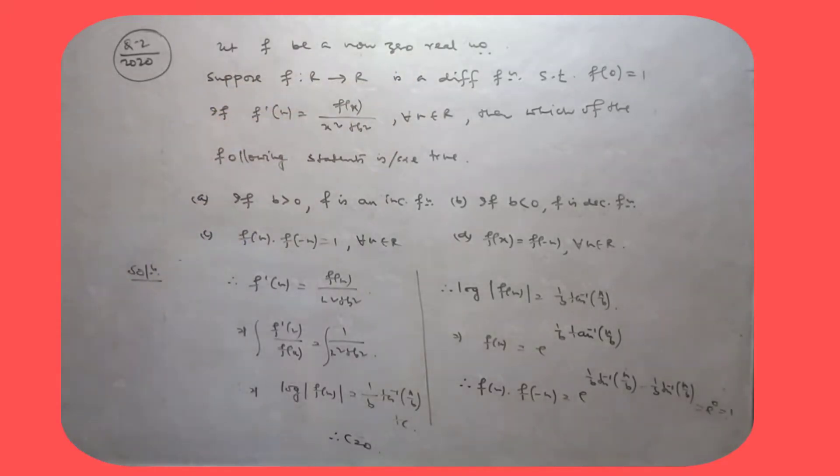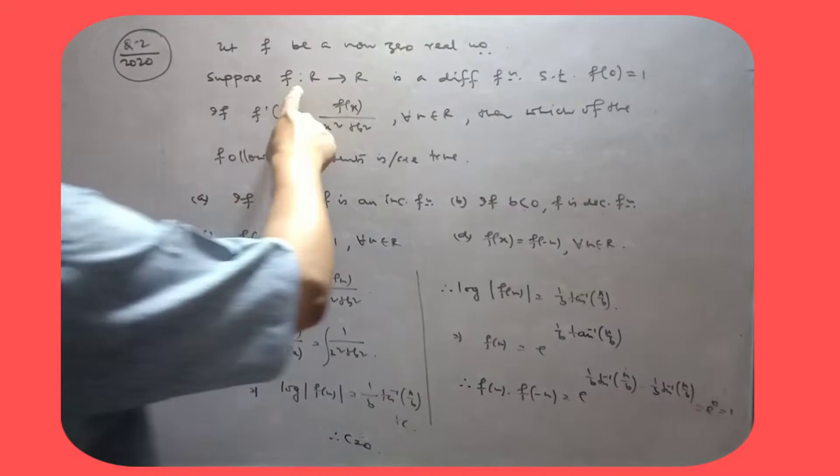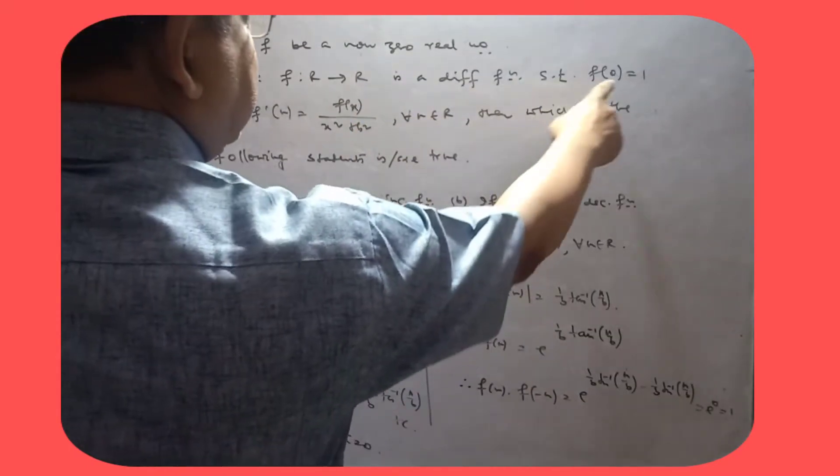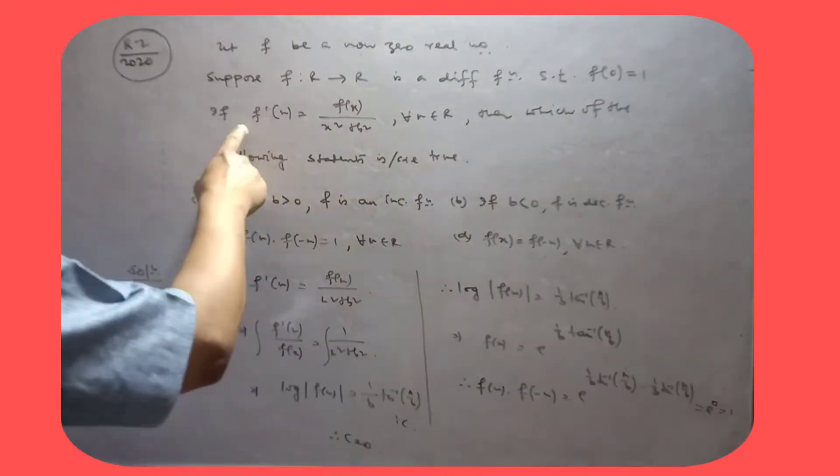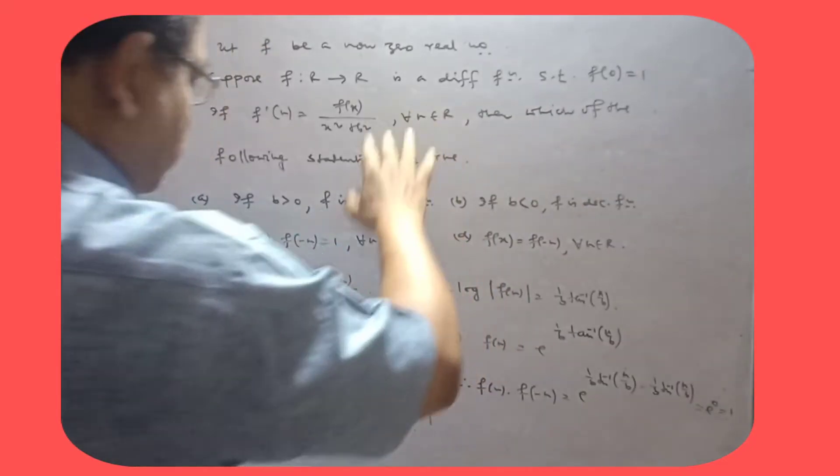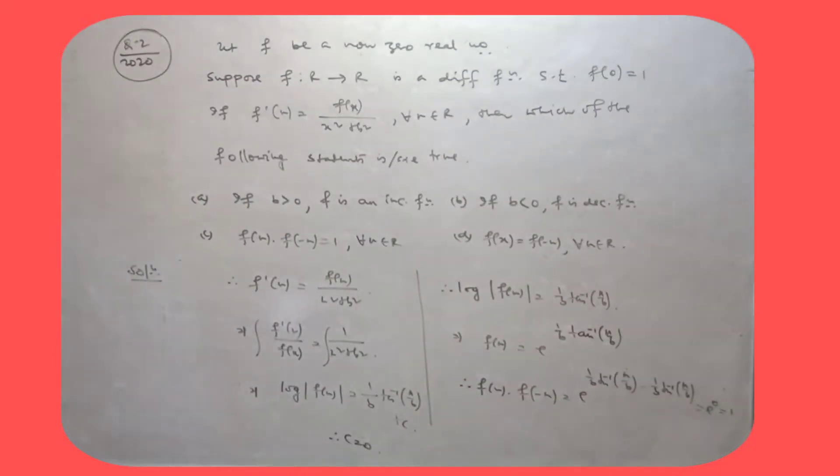Let A be a non-zero real number. Suppose if f is a real function, two real functions, f is a differential function such that f'(x) is equal to this for every x. Then which of the following statements are true?